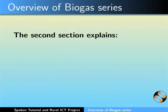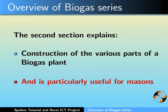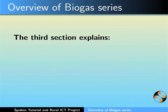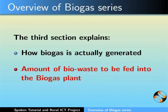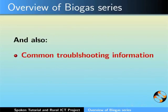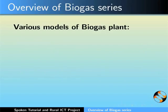The second section explains the construction of the various parts of a biogas plant and is particularly useful for masons. The third section explains how biogas is actually generated, the amount of biowaste to be fed into the biogas plant, common troubleshooting information and periodic repair and maintenance tasks to be done on the biogas plant.